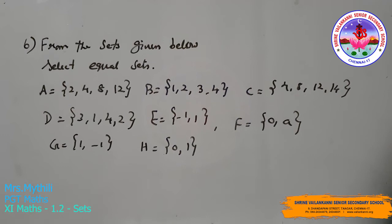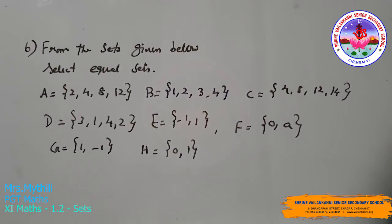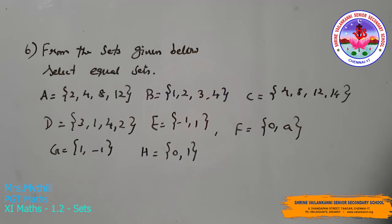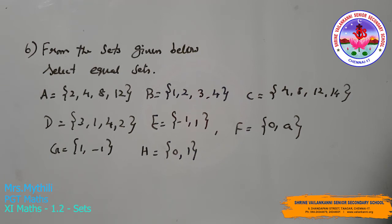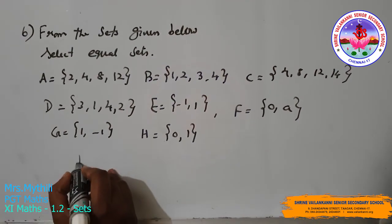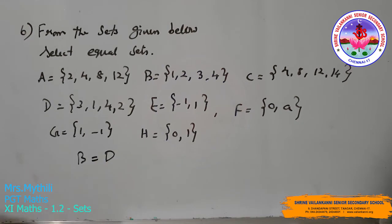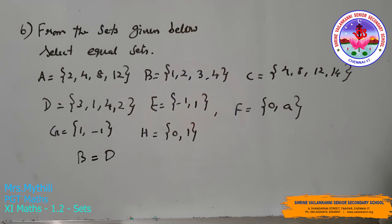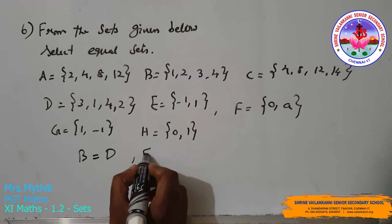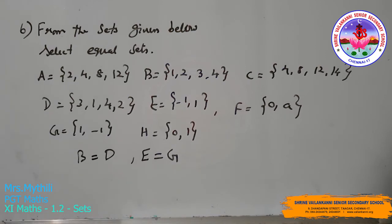Question 6: from the sets given below, select the equal sets. A = {2, 4, 8, 12} and C = {4, 8, 12, 14}: 2 does not belong to C and 14 does not belong to A, so they are not equal. B = {1, 2, 3, 4} and D = {3, 1, 4, 2}: the elements are the same, so B = D. E = {−1, 1} and G = {1, −1}: the elements are the same, so E = G. Therefore B and D are equal sets, and E and G are equal sets.